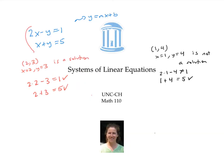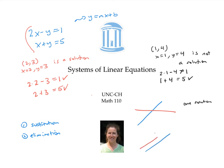In this video, we've solved systems of linear equations using the method of substitution and the method of elimination. We've seen that systems of linear equations can have one solution, when the lines intersect in one point; they can be inconsistent and have no solutions, corresponding to parallel lines; or they can be dependent and have infinitely many solutions, corresponding to lines lying on top of each other.